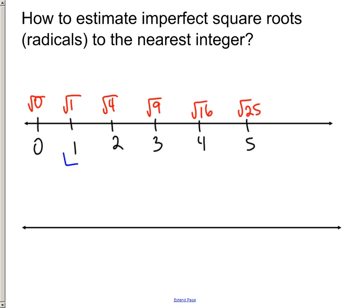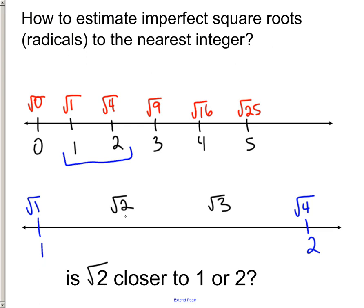Let's just kind of focus here on the distance between 1 and 2. So if I count it up by radicals, this would be radical 1, radical 2, and radical 3. So is the radical 2 closer to 1, or is it closer to 2? And we can see that it's absolutely closer to 1.